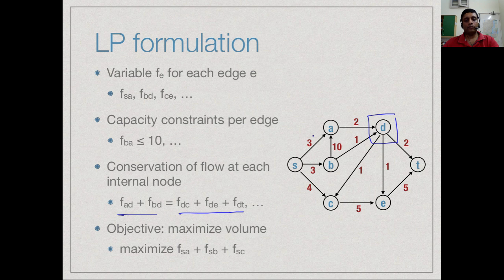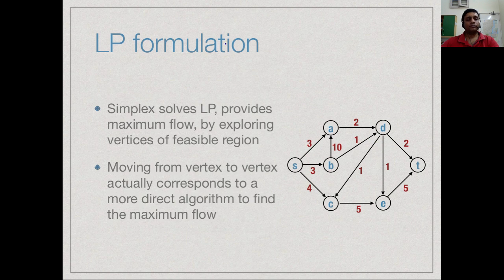Finally, our objective is to maximize the flow out of s: F_SA plus F_SB plus F_SC. This is the objective function. We invoke a linear programming solver such as simplex on this formulation to get an answer.